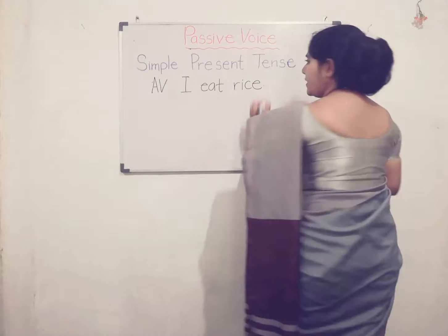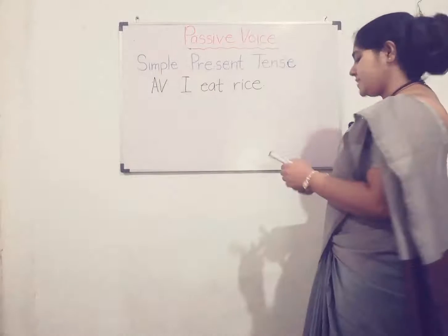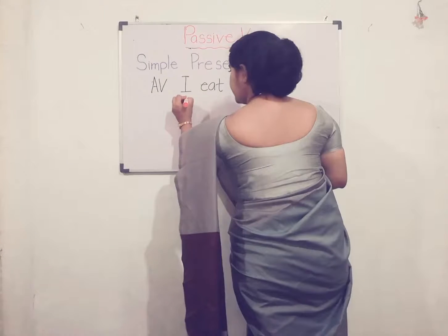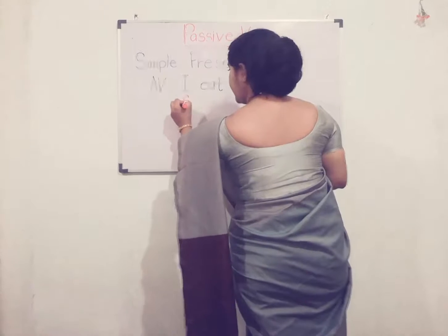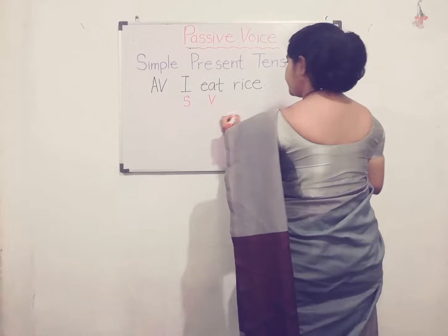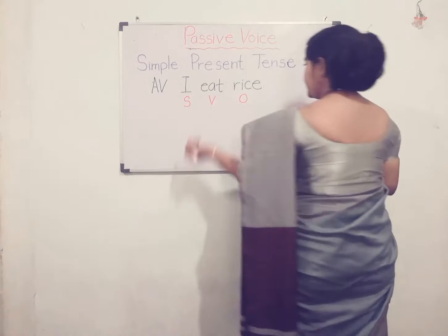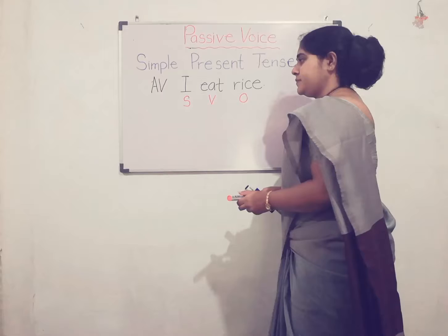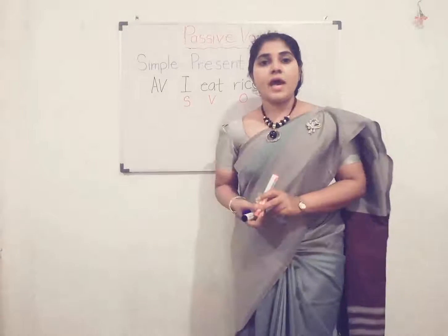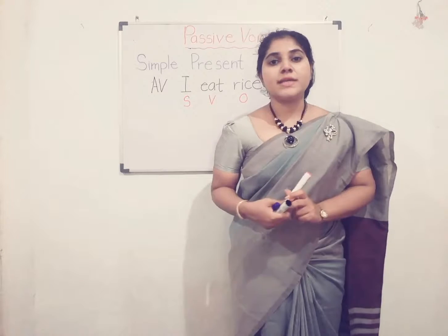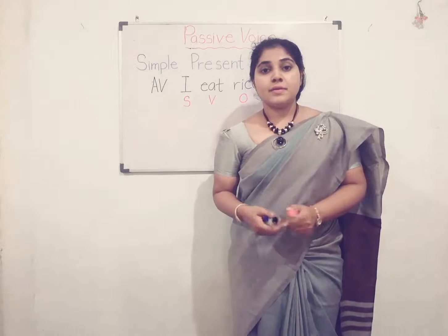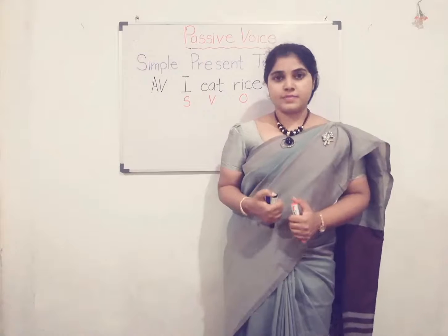Let's define this sentence. 'I' means the subject, 'eat' means the verb, and 'rice' is the object. First of all, you have to have a clear knowledge about the past participle of verbs.